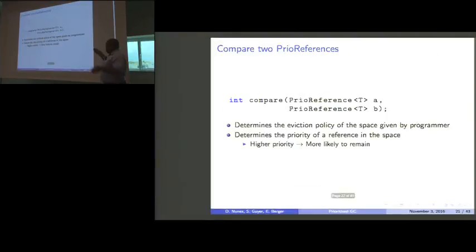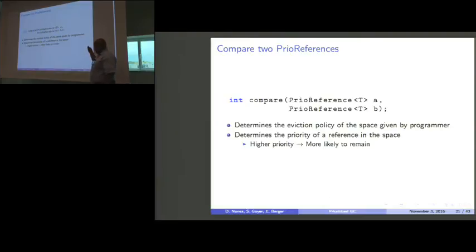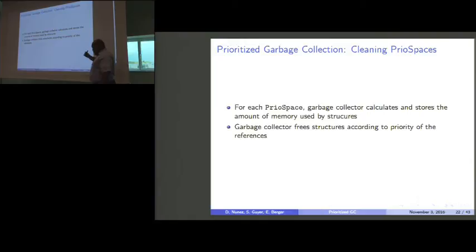That's all determined by this compare function. This determines the eviction policy of the space, or in other words, the importance of a particular reference when compared to another. Ideally, the higher the priority of a reference, the more likely it should remain in the system. Because, for the programmer, that means this reference and its associated object are very important. Therefore, we might end up using that again. This is the policy. The mechanism is actually very simple. The collector will just go through each of those prior spaces and just calculates how much actual memory that these references, that these objects use. It will do this in the priority that was dictated by this compare function. When it finds that there's a... it will free that structure according to that priority. The lower the priority, the more likely it's to be evicted.